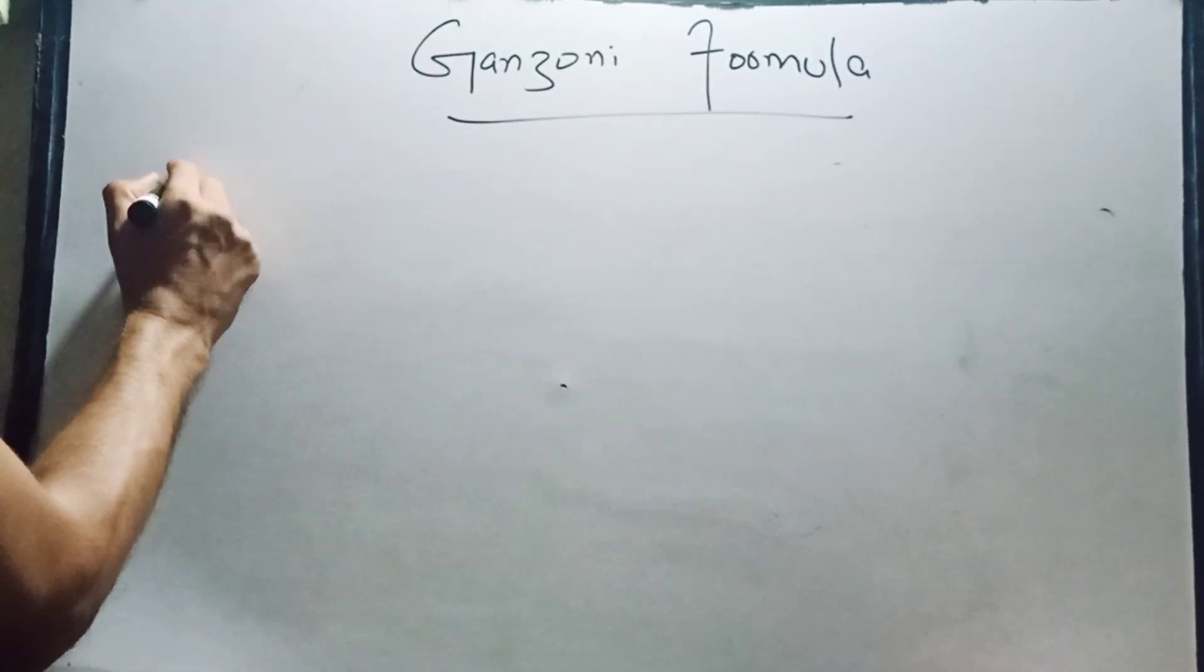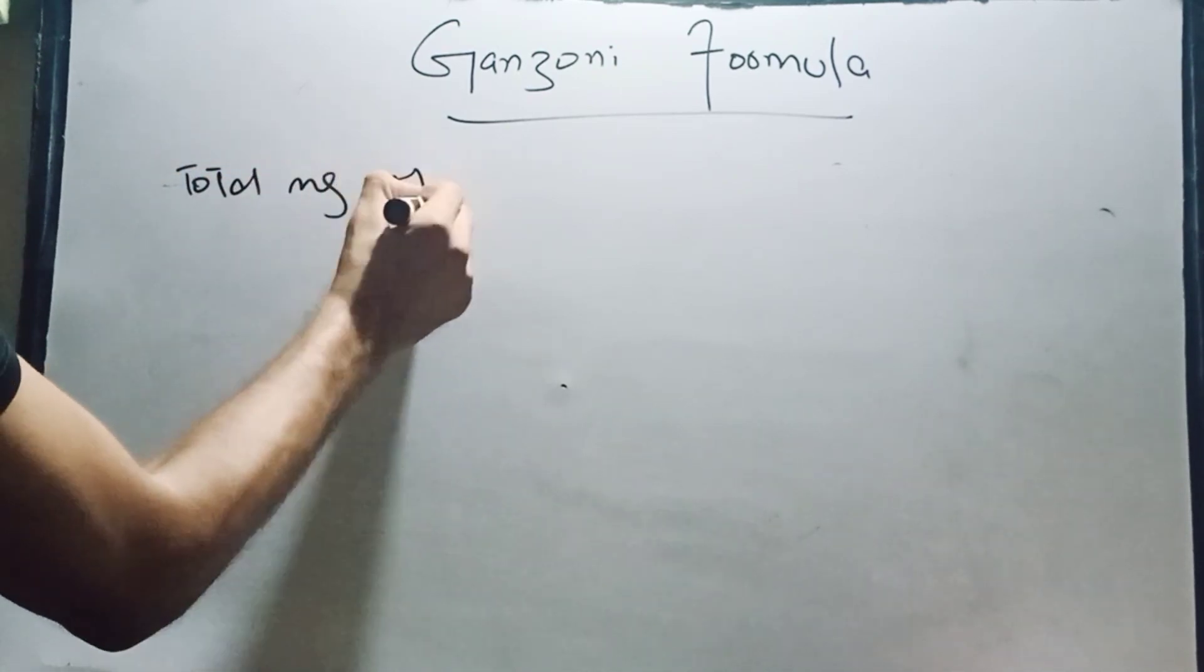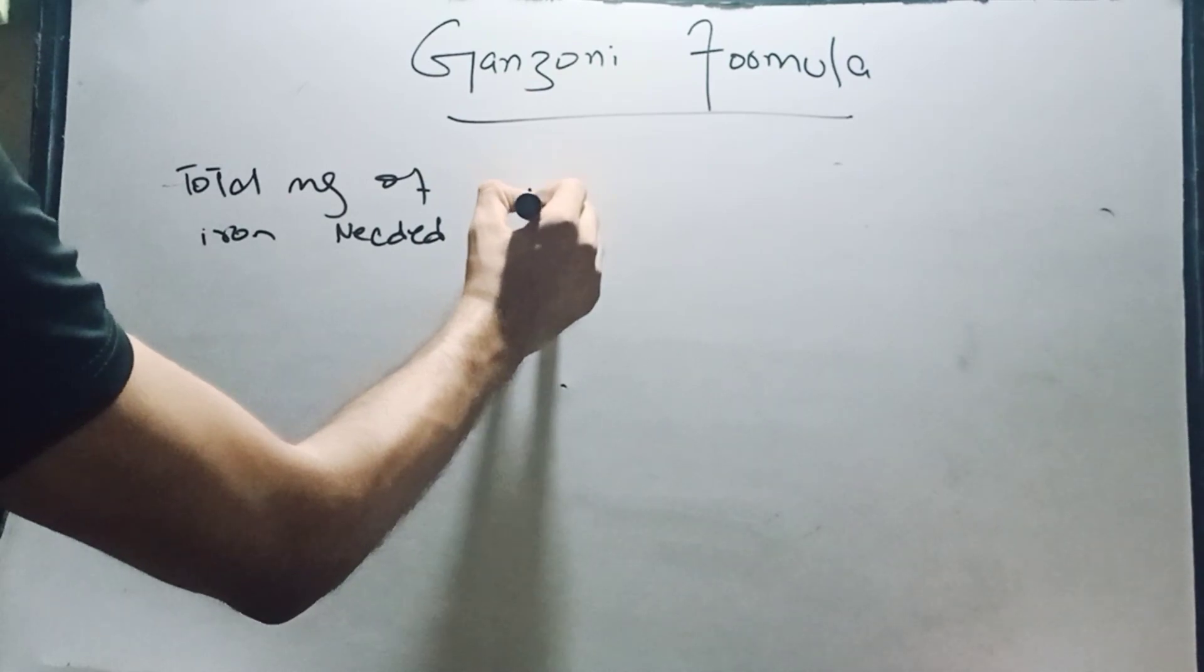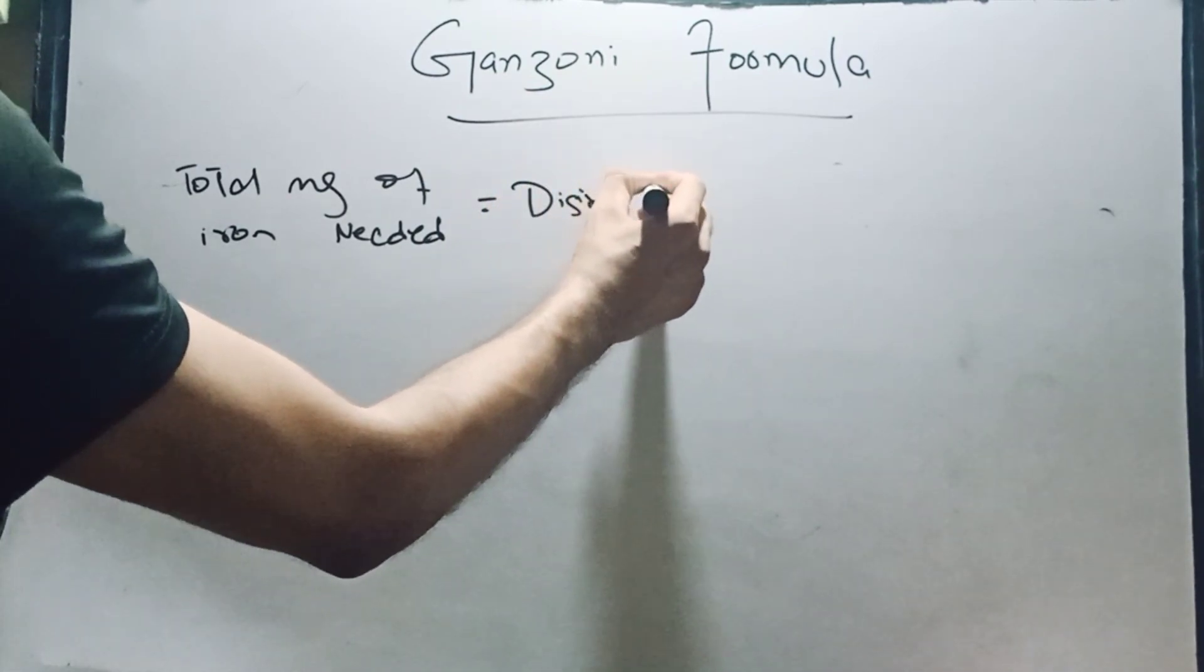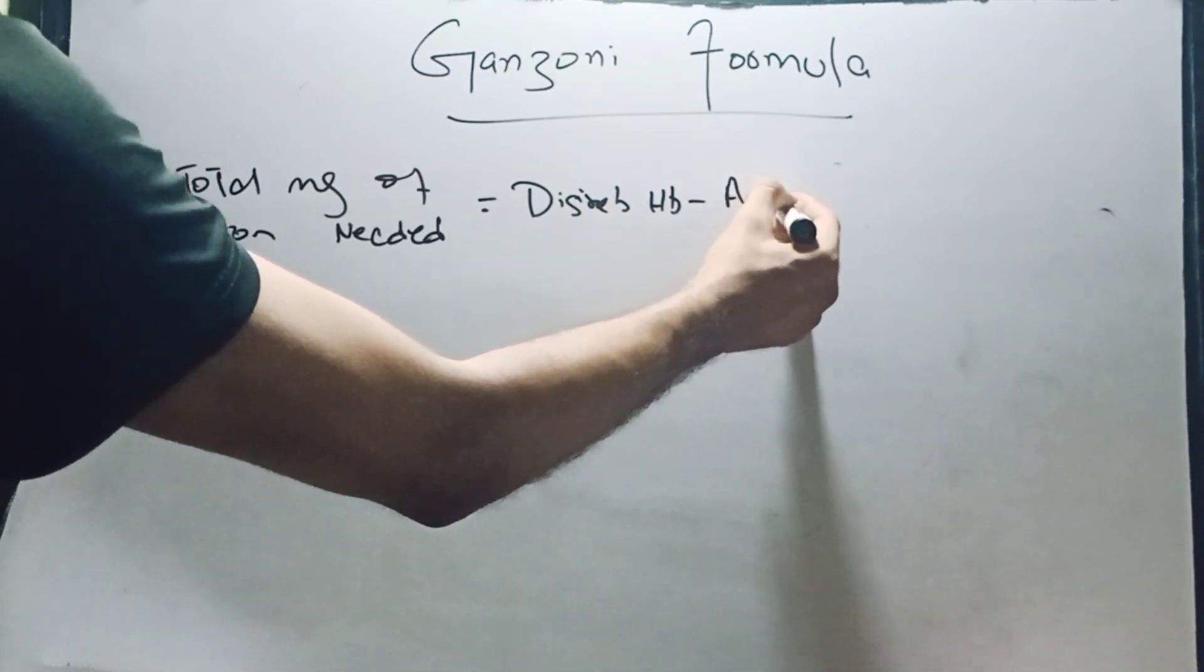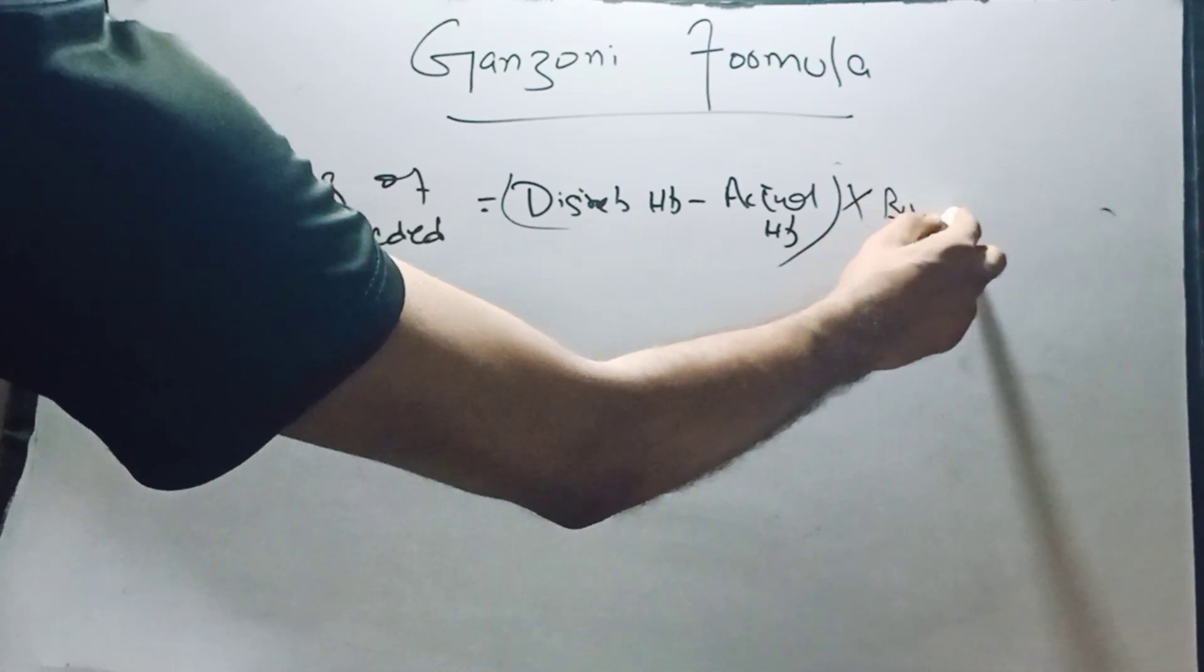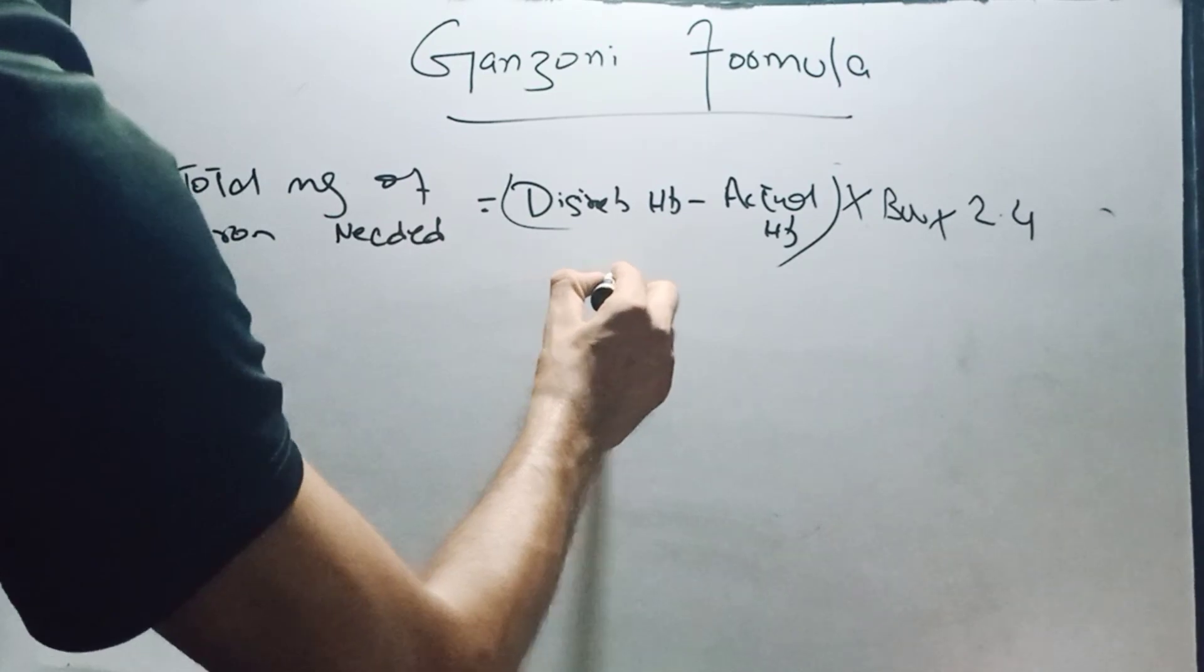This formula is: total mg of iron needed equals desired Hb, which is usually taken as 14, minus actual patient Hb, multiplied by patient body weight, multiplied by 2.4 which is a constant, plus storage iron.